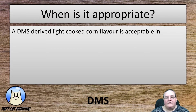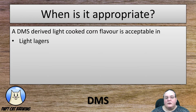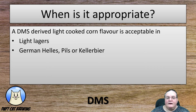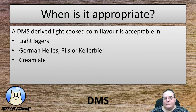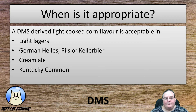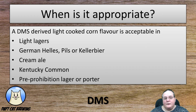So when is it appropriate? A DMS-derived light cooked corn flavour is acceptable in several styles: light lagers, German Helles, Pils or Kellerbiers, Cream Ales, Kentucky Common, and also in Pre-Prohibition lagers and porters.